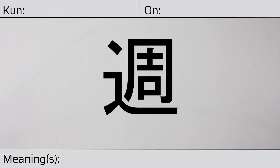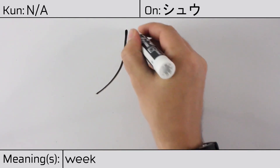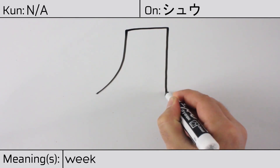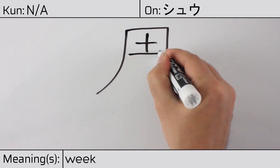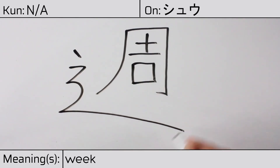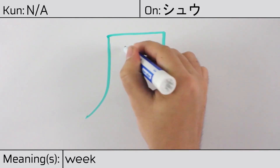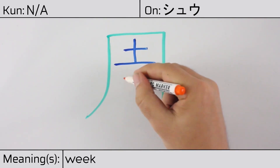Welcome to this lesson on Japanese kanji. Today, we'll be discussing this character. This kanji has no kunyomi or Japanese readings, but it has an onyomi or Chinese reading of shuu. This character has the meaning week. Here is the stroke order.